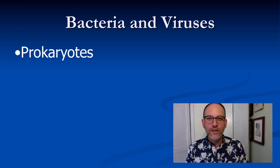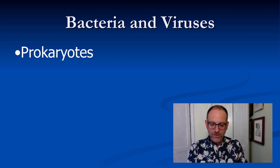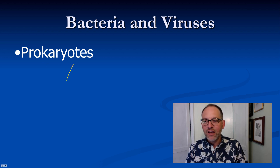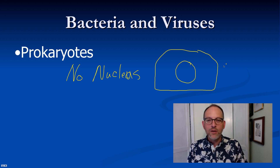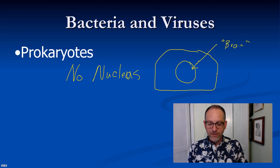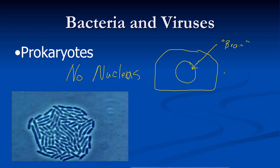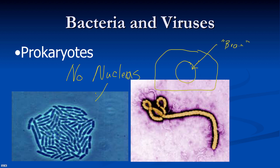Let's start out with how these are categorized. They are called prokaryotes because a prokaryote means they have no nucleus. Inside our cells, you will find a structure called a nucleus, which is referred to as the brain of the cell. Bacteria and viruses do not have that. Here's a bacteria colony, and here is an Ebola virus.